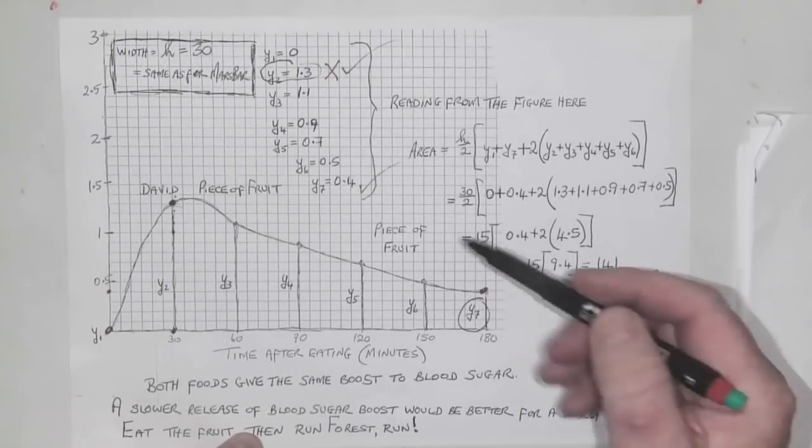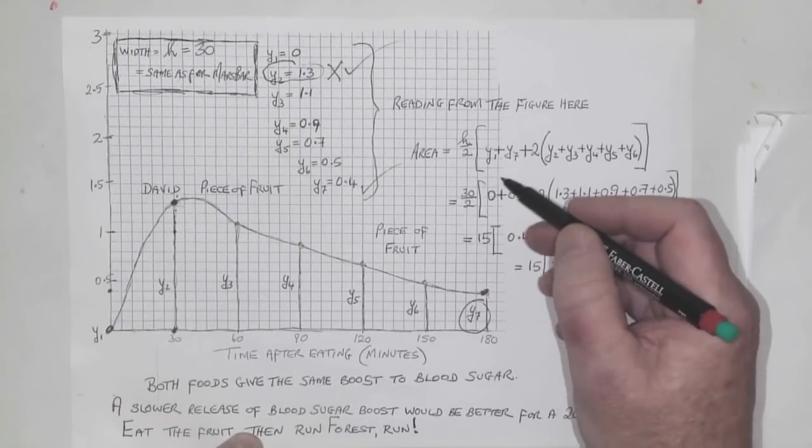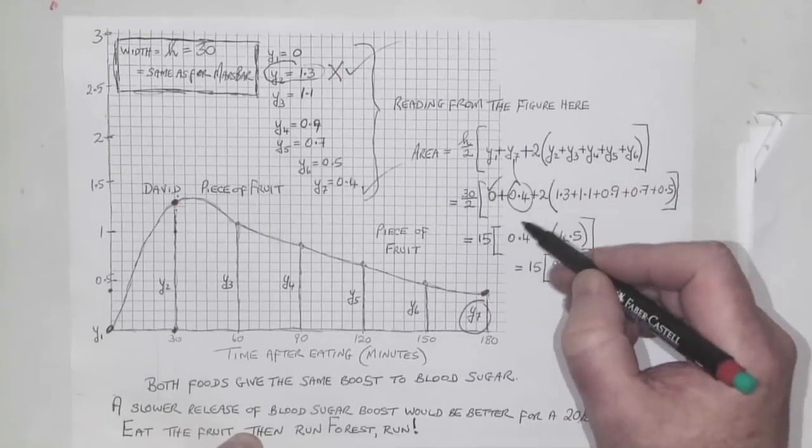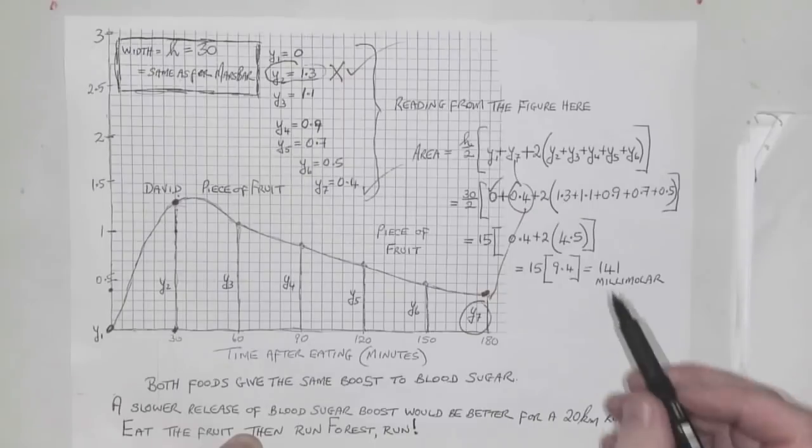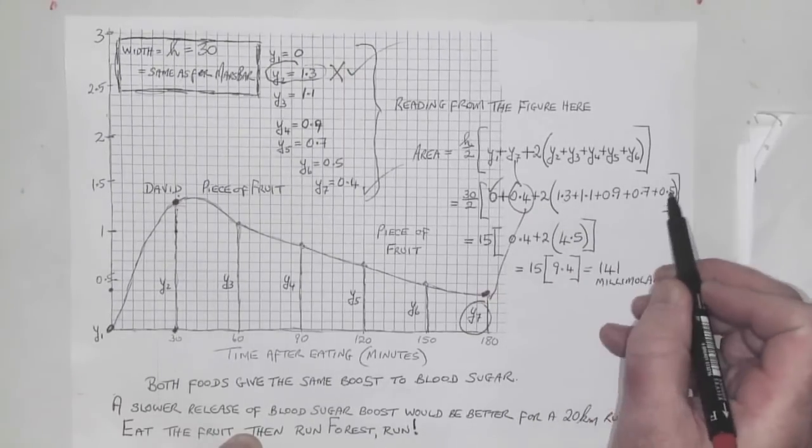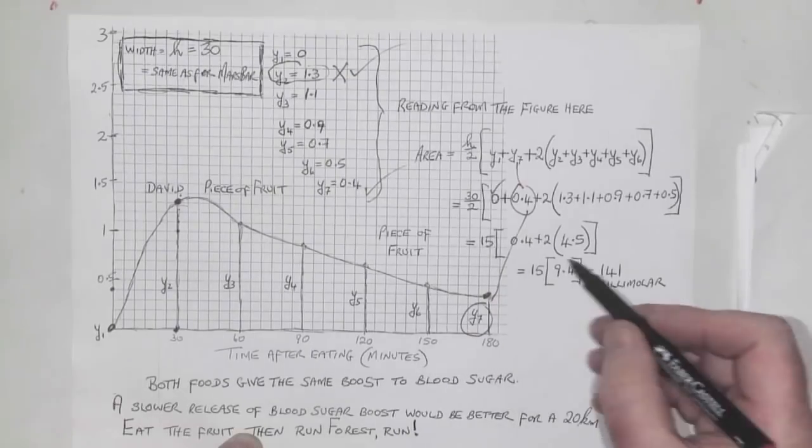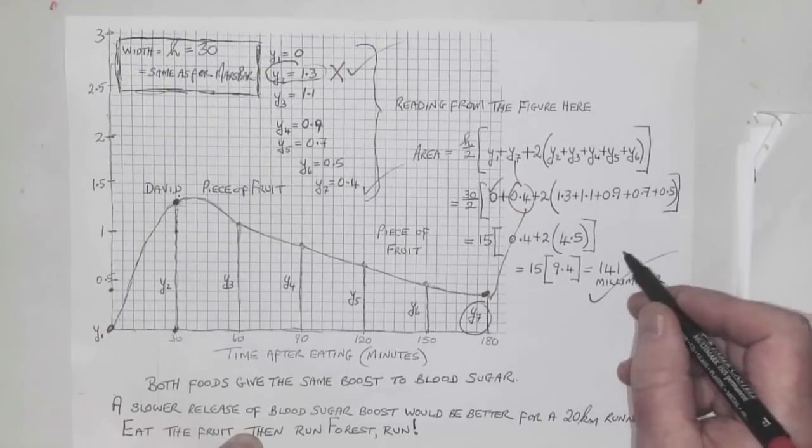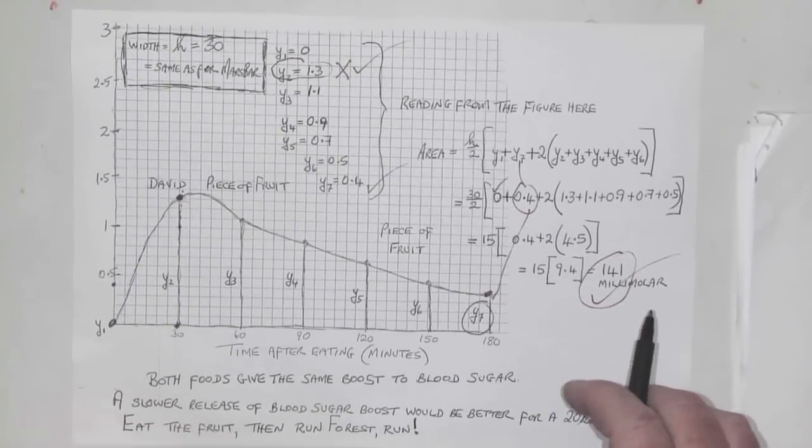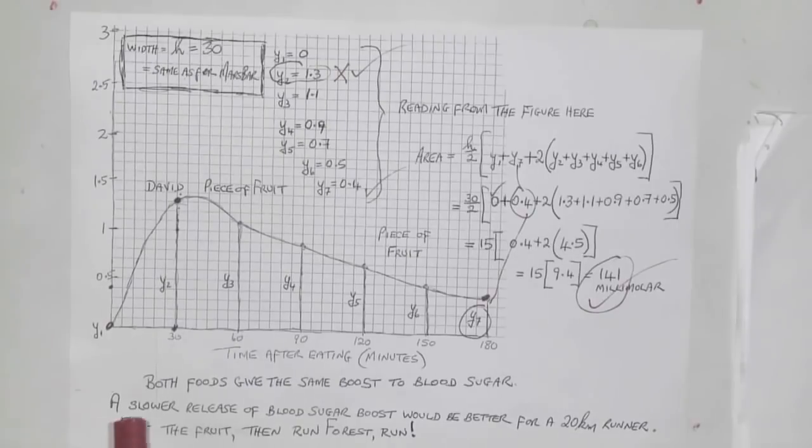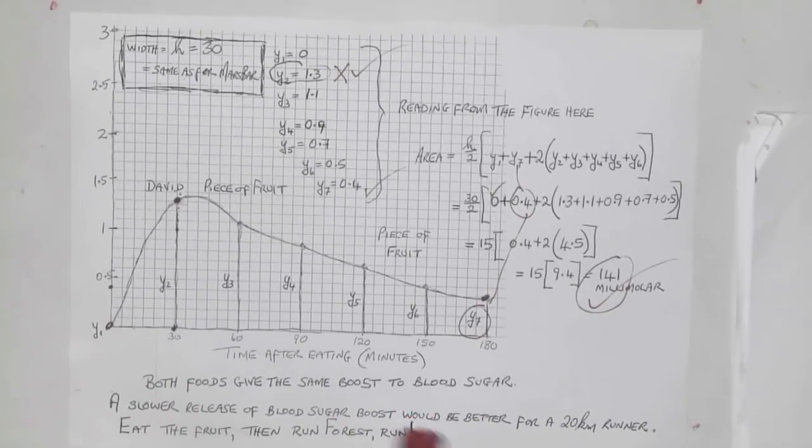H over 2 is 30 over 2. Y1 is 0, y7 is 0.4—it's not 0 like I might have liked. Then it's 2 times each of the heights y2, y3, y4, y5, y6 added up. The answer works out to 141. I've done that on purpose because both foods give the same boost to blood sugar.